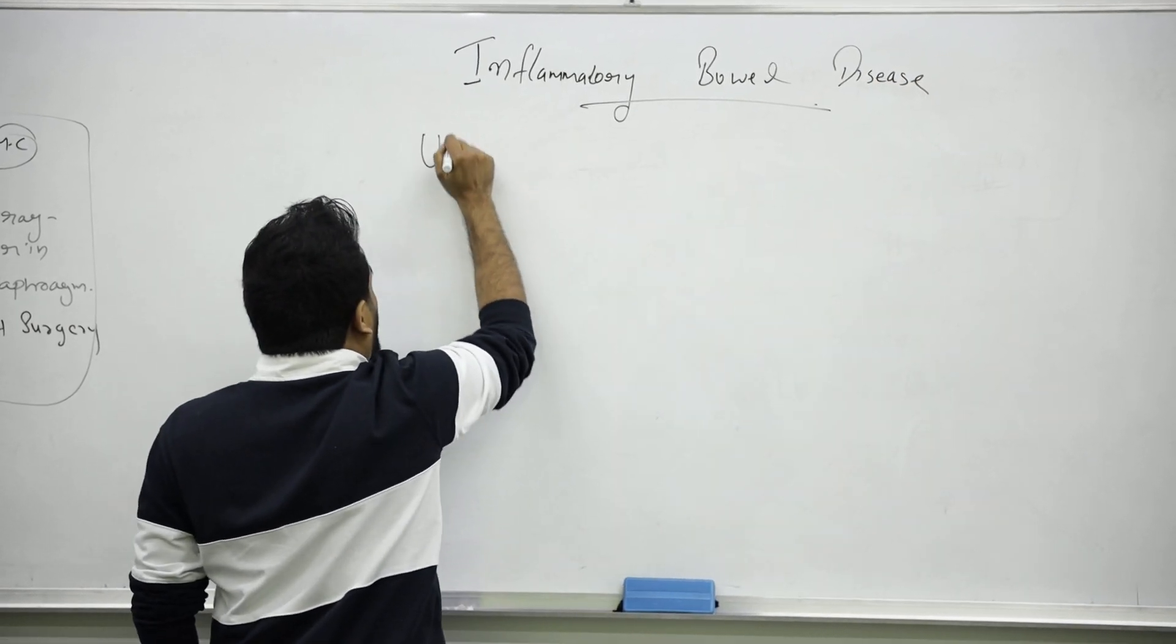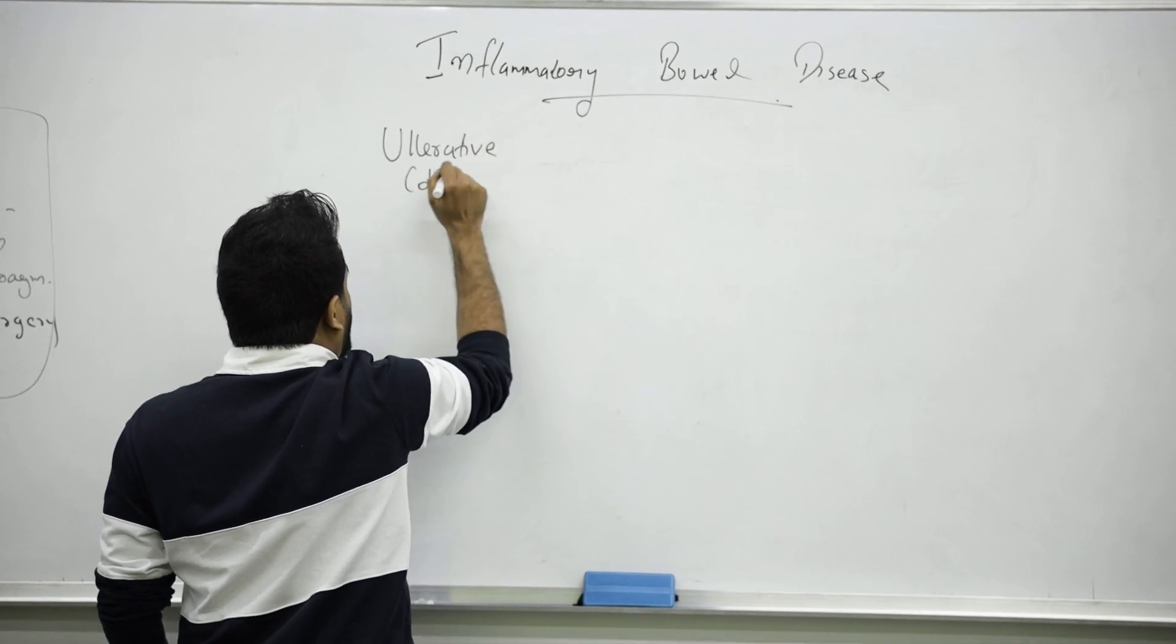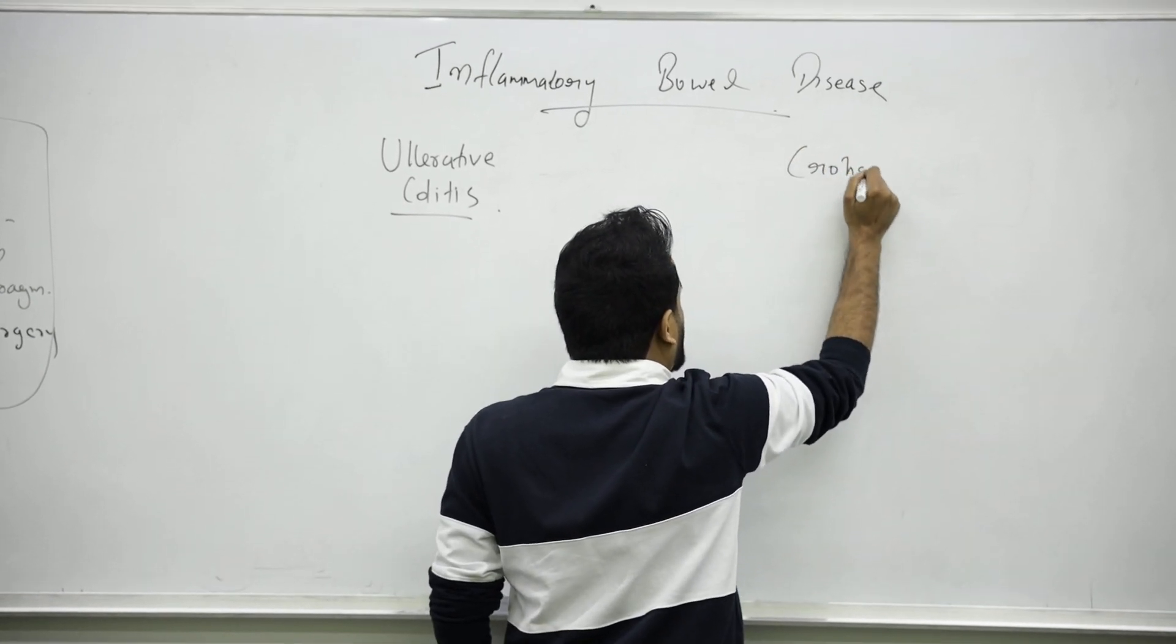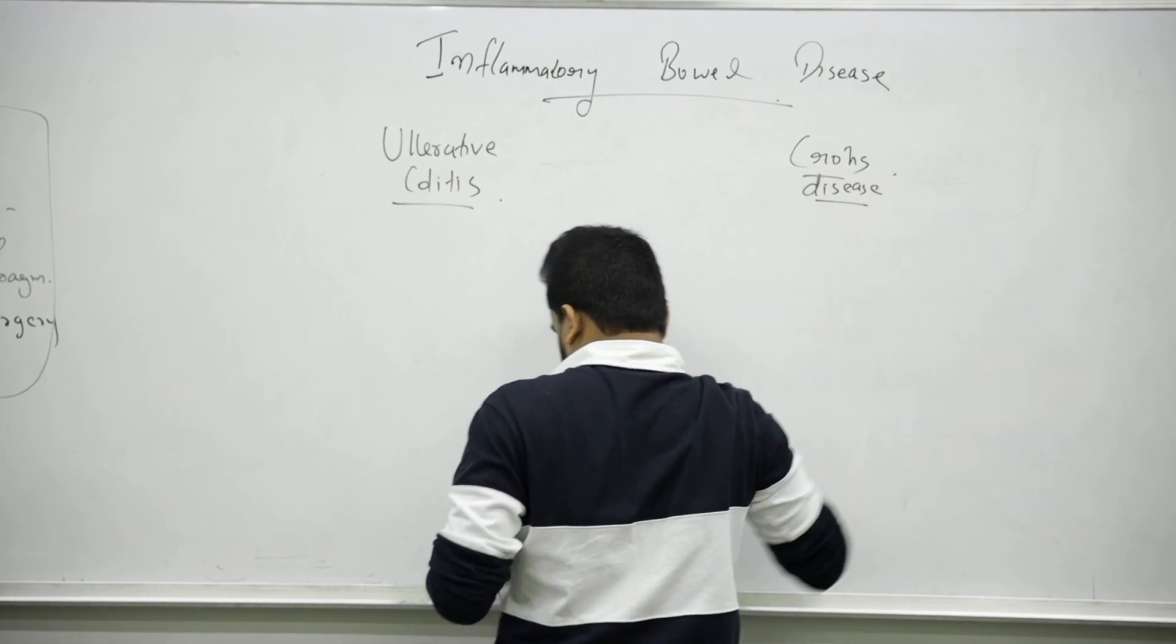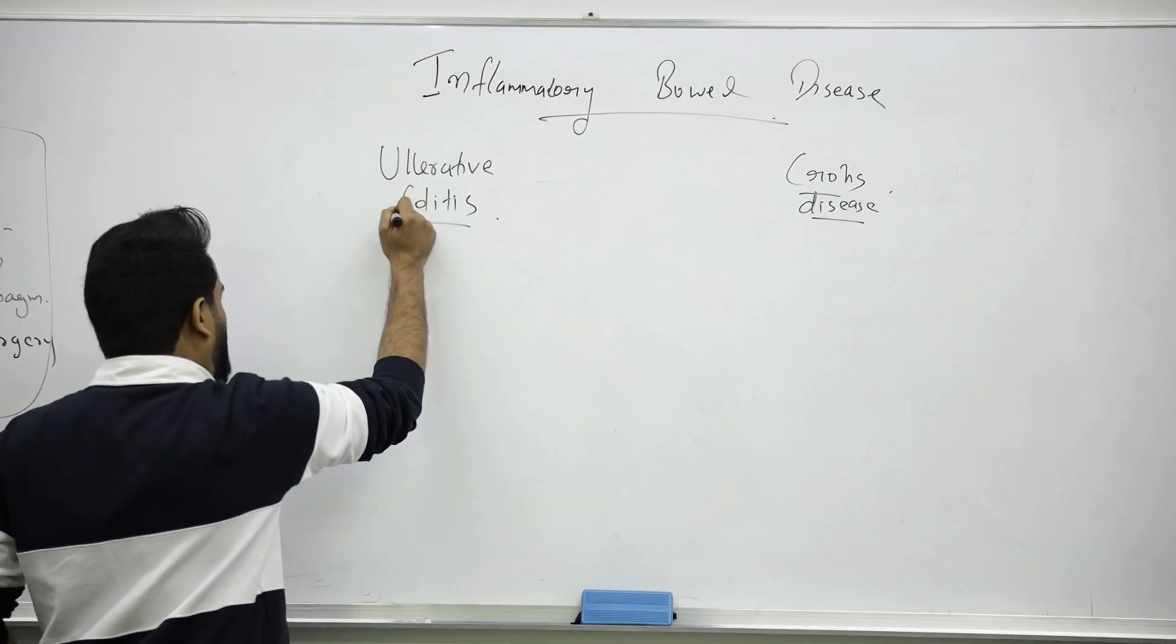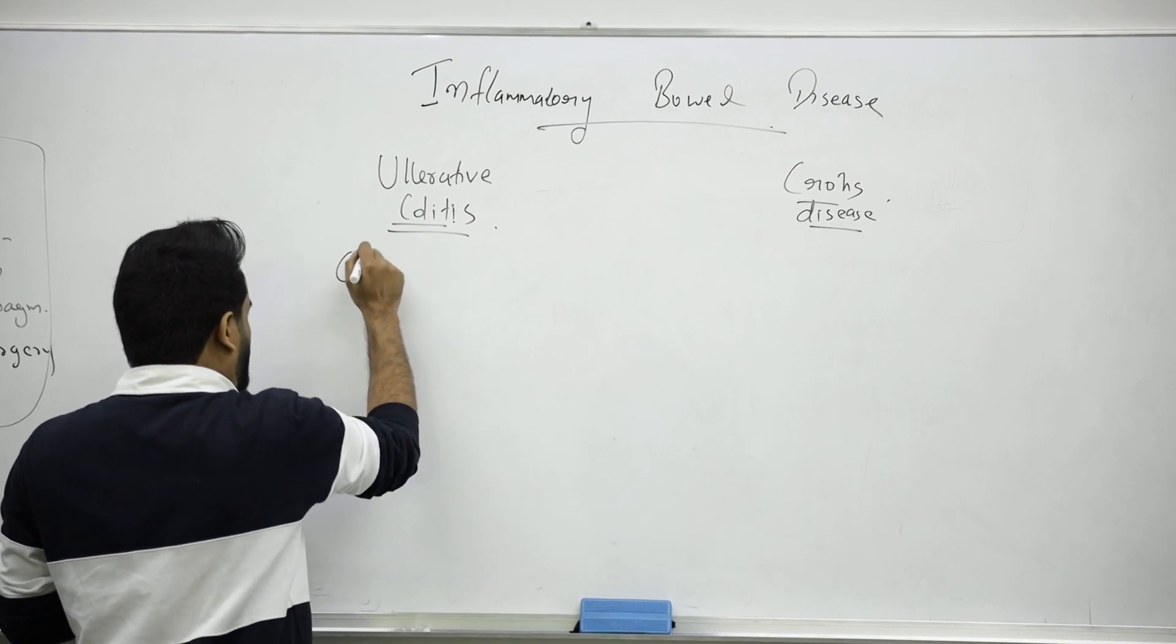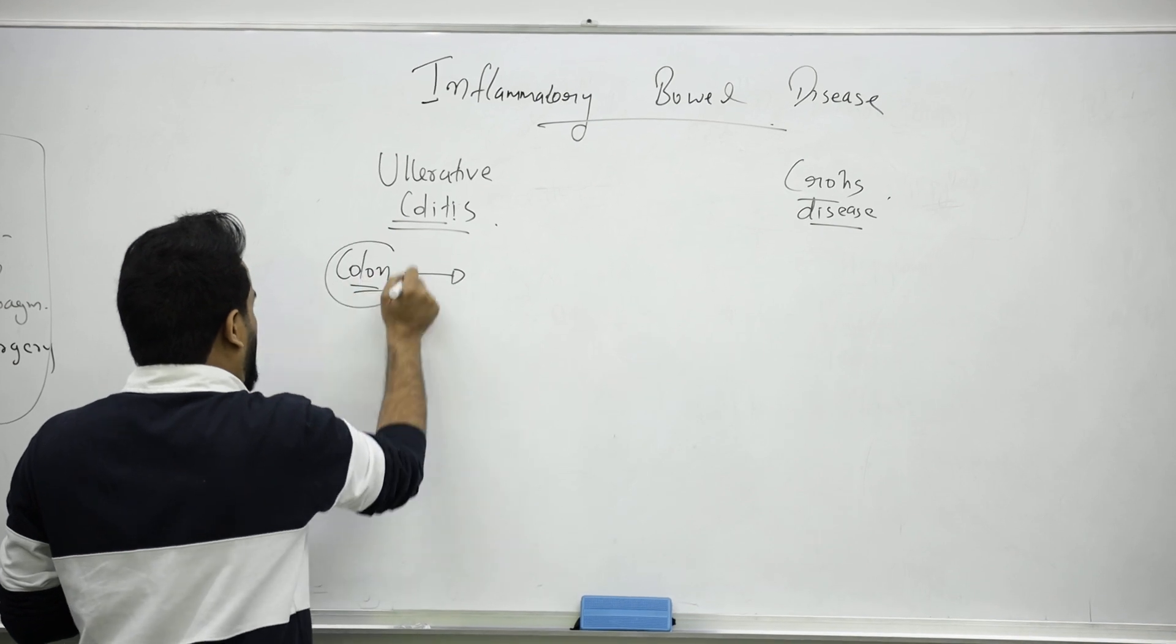There are two types mainly. One is called ulcerative colitis. Second is called Crohn's disease. Remember, ulcerative colitis means mainly the colon is inflamed.